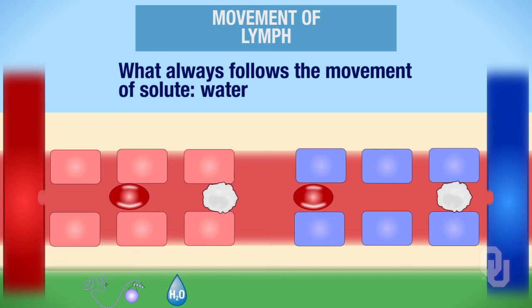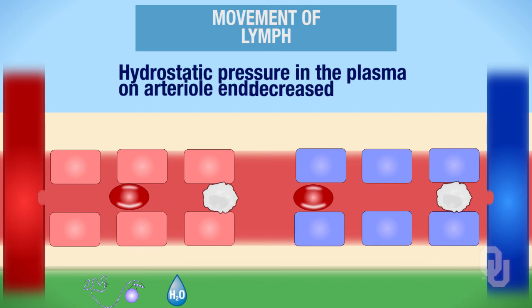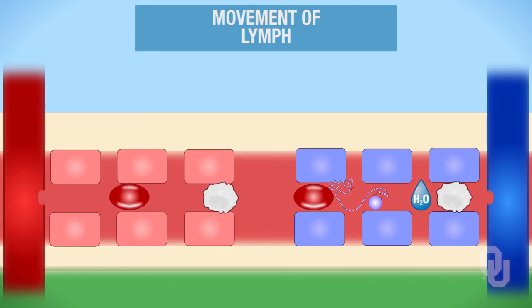So what has this movement done to the hydrostatic pressure in the plasma on the arterial end? The hydrostatic pressure has decreased. Now take a look at the venous end of the capillary. There is now a lower pressure in the plasma on the venous end of the capillary that allows the proteins and the water to go back into circulation. Proteins go first, setting up the osmotic gradient, and then water will follow.